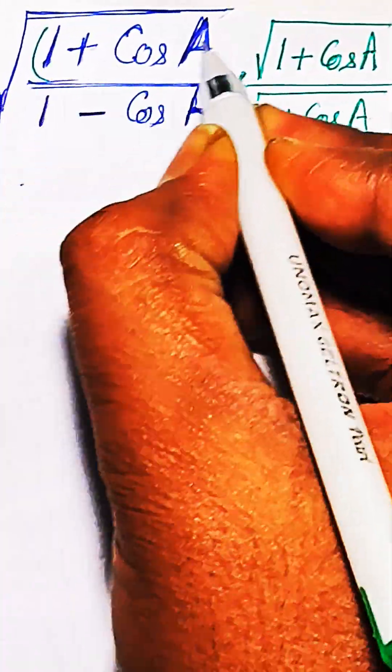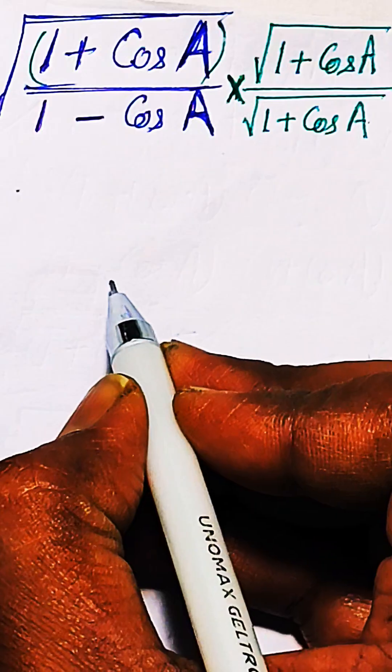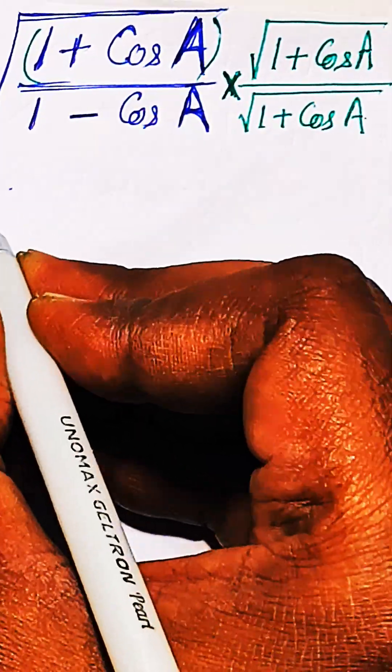You can see (1 + cos A) is appearing twice in the numerator.